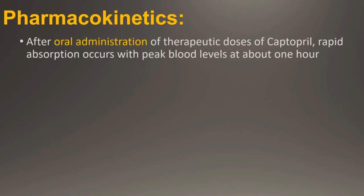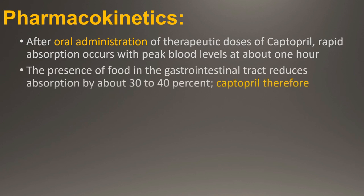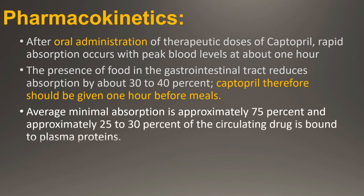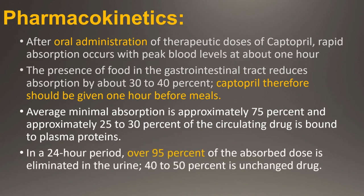Pharmacokinetics: After oral administration of therapeutic dosages of Captopril, rapid absorption occurs with peak blood levels at about 1 hour. The presence of food in the gastrointestinal tract reduces absorption by about 30 to 40 percent; Captopril therefore should be given 1 hour before meals. Average minimal absorption is approximately 75 percent and approximately 25 to 30 percent of the circulating drug is bound to plasma proteins. In a 24-hour period, over 95 percent of the absorbed dose is eliminated in urine, 40 to 50 percent unchanged.